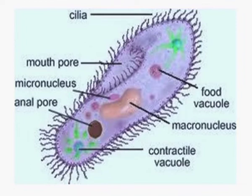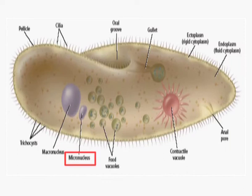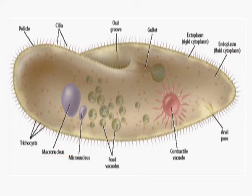Paramecium has its whole body covered by cilia, so movement is brought about by these cilia. A difference between Amoeba, Euglena, and Paramecium is that Paramecium contains two nuclei: the micronucleus, which is reproductive in nature, and the macronucleus, which is vegetative.